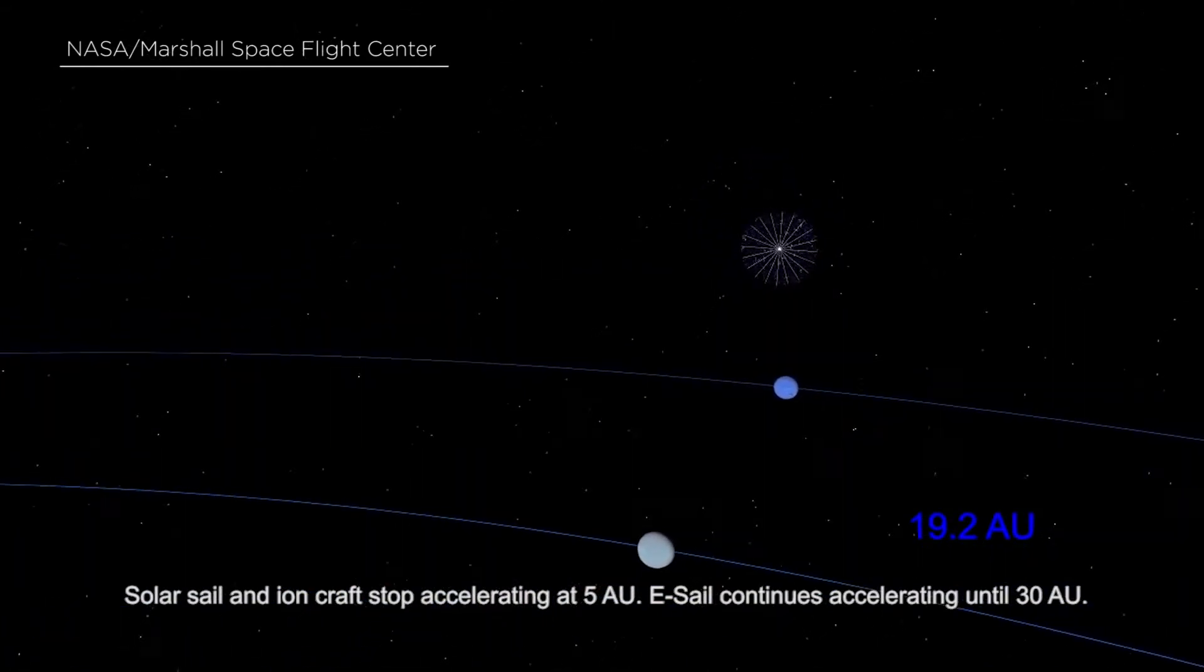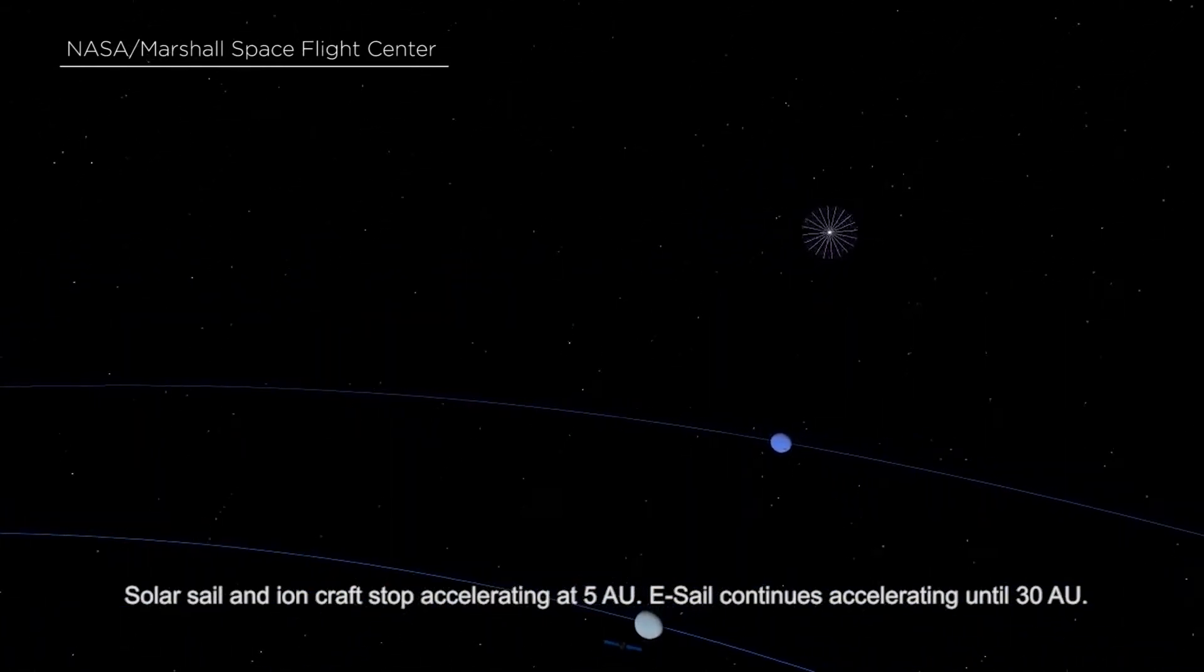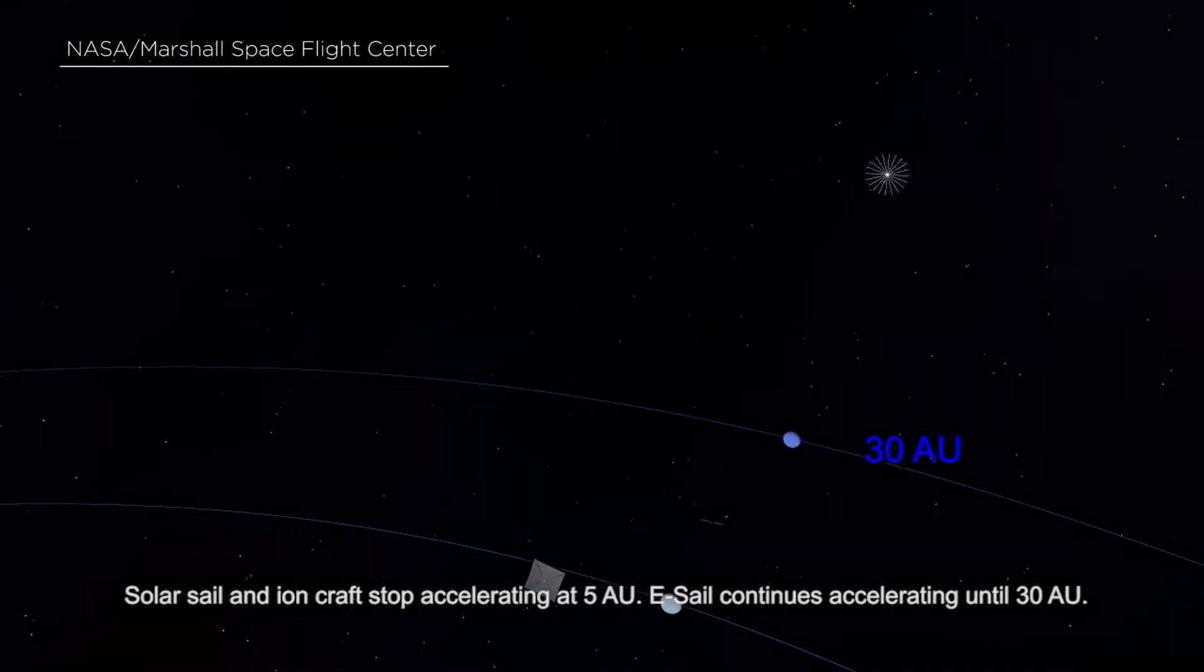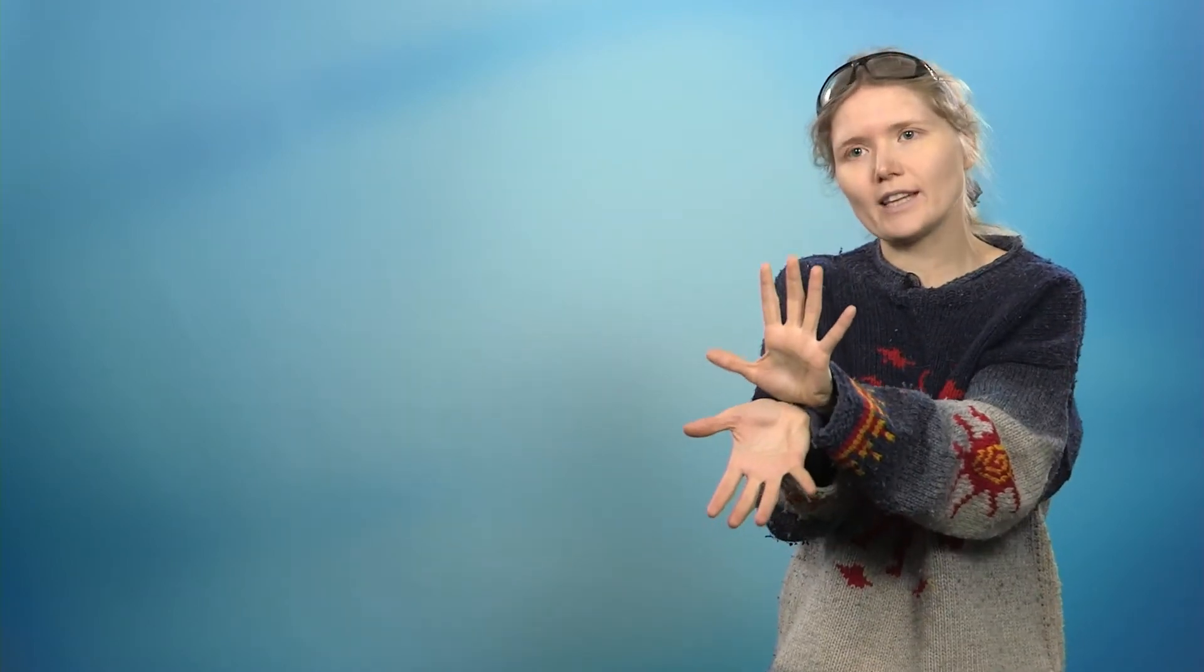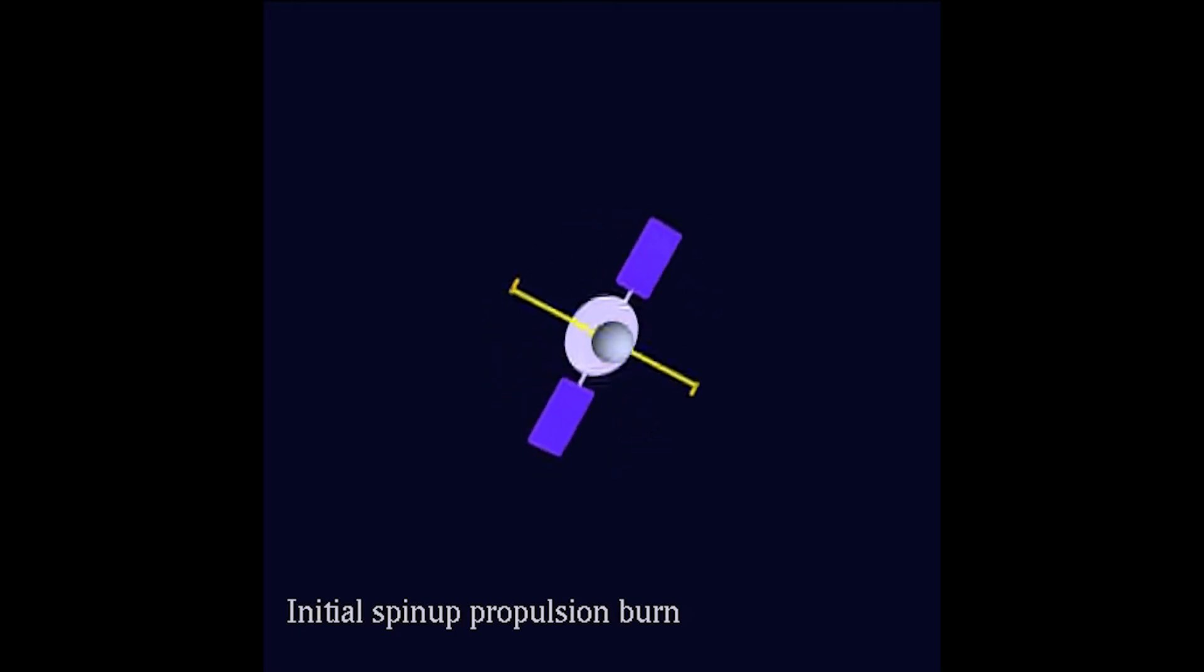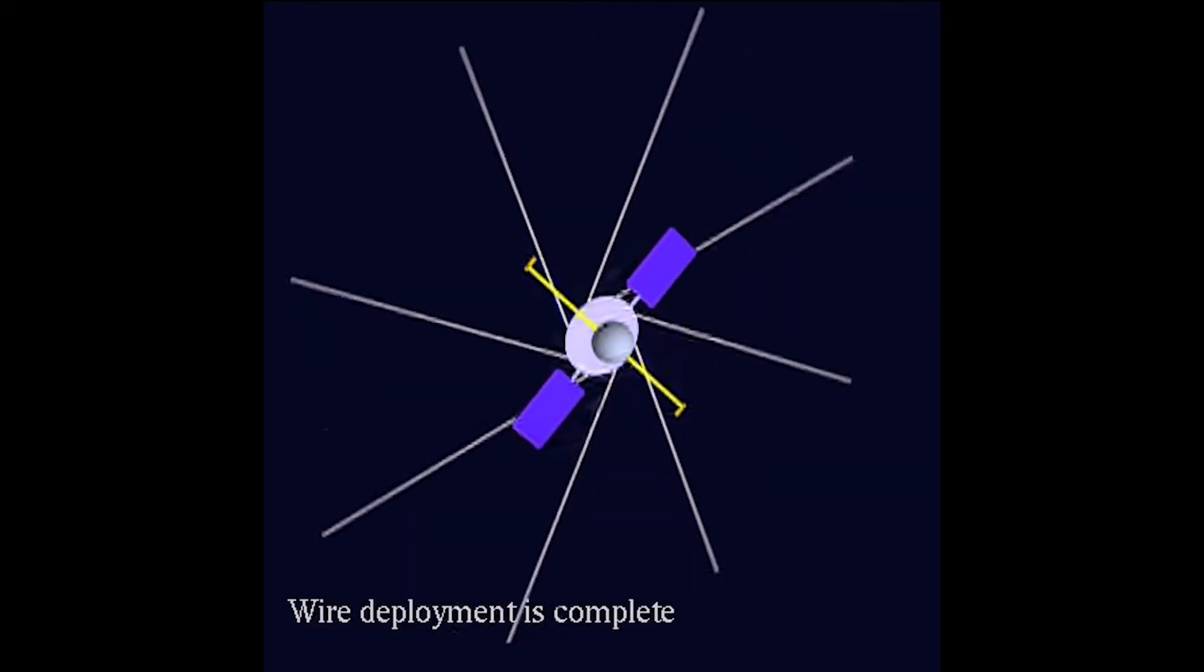Now you ask, 2,000 kilometers of tether, how can you stretch it in space? How can you keep it stretched? So we have the tethers, maybe 20 or maybe 100 tethers coming from the central spacecraft. And we rotate the whole spacecraft so that you have this centrifugal force keeping the wire stretched and at the same time separated from each other.